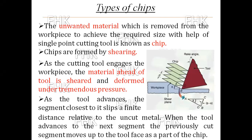First of all, what is the mechanics of cutting with a single point cutting tool? The unwanted material which is removed from the workpiece to achieve the required size with a single point cutting tool is known as a chip. Chips are formed by shearing with a single point cutting tool. As the cutting tool engages the workpiece, the material ahead of the tool is sheared and deformed under tremendous pressure.